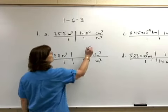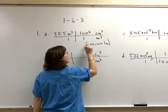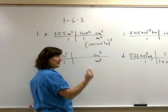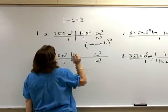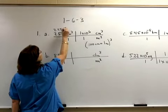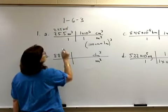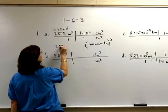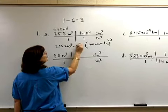I know that 100 centimeters equals 1 meter. If I cube 100, 100 times 100 times 100 is a million. I'm going to change this to 2.55 times 10 to the 1, and 1 plus 6 is 7. My answer is 2.55 times 10 to the 7th centimeters cubed.